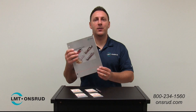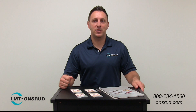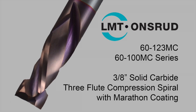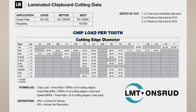Within our production routing catalog, we have listed different chip load charts depending on the material that is being machined. As an example today, we're going to be using part number 60-123MC to demonstrate how to calculate the proper spindle speed and feed rate for this tool. First, locate the correct chart based on the material you're cutting. Assuming we're cutting a laminated particle board such as melamine, we are going to use the laminated chipboard cutting chart located on page 78. Secondly, locate the tool series on the left column — in this case the 60-100MC — then locate the tool's cutting diameter at the top horizontal column, in this case 3/8. Cross these two and you will see a recommended chip load range for the tool you're using.